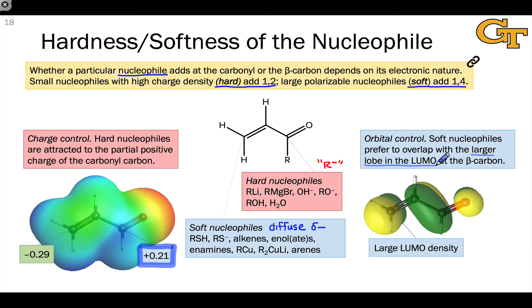And in the majority of these, the largest lobe of the LUMO is located on the beta carbon. For example, that's the situation in the structure shown here. That large LUMO density at the beta carbon drives the nucleophile to that position through orbital control. And so soft nucleophiles tend to add to the beta carbon in preference to the carbonyl carbon, leading to conjugate addition products.